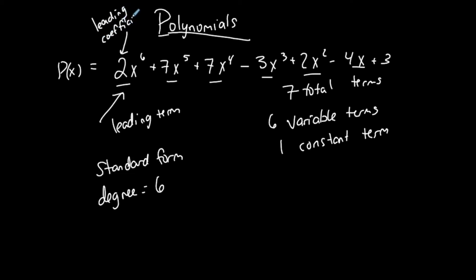So we have a few key parts of polynomials to know: the terms, which can be separated into variable terms or constant terms; the number of terms; the leading term, which is the one in front when in standard form; the degree of the polynomial; and the leading coefficient.